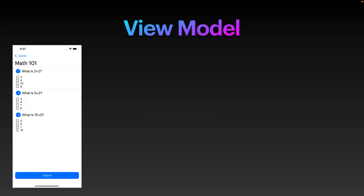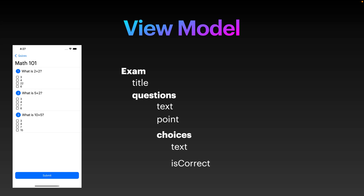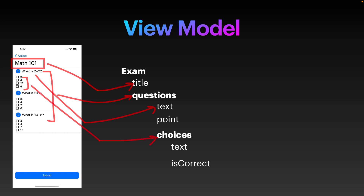Then we have the view model. The whole job of the view model is to provide the data to the view. Looking at the view on the left hand side, we see that the exam has a title which is 'Math 101', coming from a title property in the view model. All the questions come from a questions property. Each question has a text property with associated points and a choices property. The whole point of the view model is to provide data to the view, and that's it.